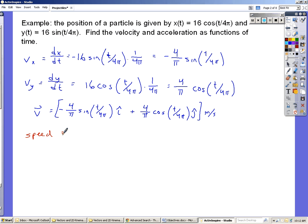Things are going to cancel. So it's going to be the square root of square vx, which is 16 over π squared times sine squared of t over 4π plus 16 over π squared cosine squared t over 4π. Now it doesn't matter what t is, sine squared plus cosine squared is equal to 1, so this becomes the square root of 16 over π squared, which is 4 over π. And that tells us that the speed of this particle is constant, it's just changing directions. It's going in a circle, this is uniform circular motion.